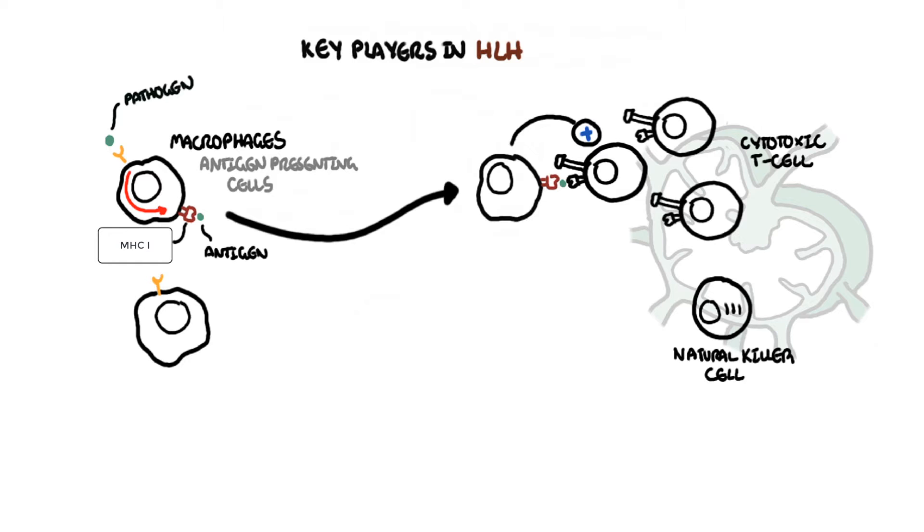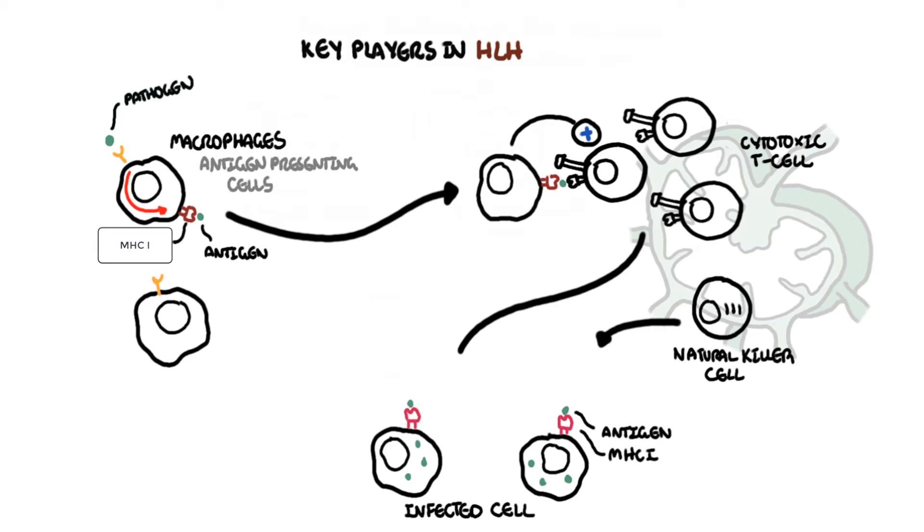Natural killer cells and cytotoxic T lymphocytes are very different, but for the purpose of this video, their actions are similar. These cells roam around areas of inflammation and scout for foreign antigens, which may be expressed on infected cells.